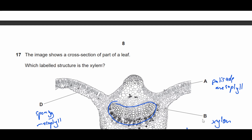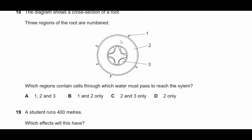Question eighteen: the diagram shows a cross section of a root. Which region contains cells through which water must pass to reach the xylem? Water on the outside first passes through the root hair cells, then through the cortex, then can go directly into the xylem — it doesn't have to pass through the phloem. Therefore only regions one and two are required. The answer reflects one and two.